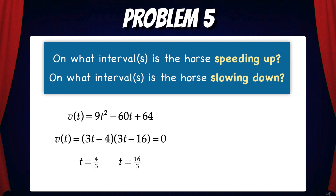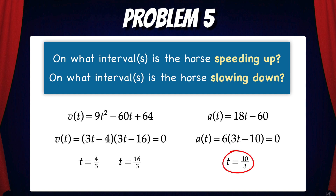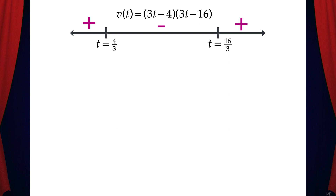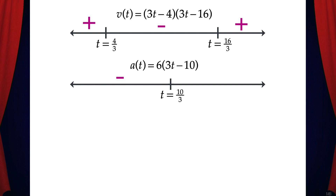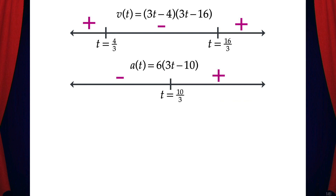We already know where v(t) = 0, but we also need to know where a(t) = 0, which occurs at t = 10/3. Here's the sign pattern for v(t) from earlier. Now we do a sign pattern test for a(t), placing t = 10/3 on a number line. Testing t = 1, the expression 3t minus 10 is negative, so a(t) is negative to the left of t = 10/3. Testing t = 10, the function is positive, so a(t) is positive to the right of t = 10/3.